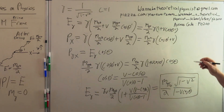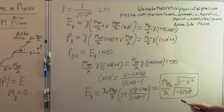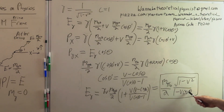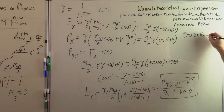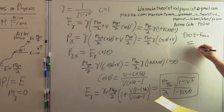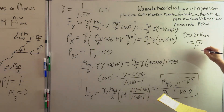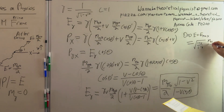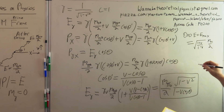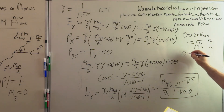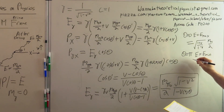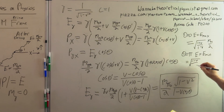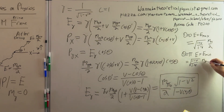The second part of the problem asks for the maximum and minimum energy. To maximize the energy, we make the denominator as small as possible — cosine theta as large as possible — so theta equals zero. E_max = sqrt((1 + v) / (1 - v)) * m pi / 2. Similarly, for the minimum, we make theta equal to pi: E_min = sqrt((1 - v) / (1 + v)) * m pi / 2.